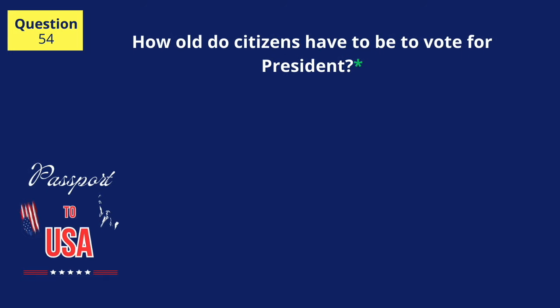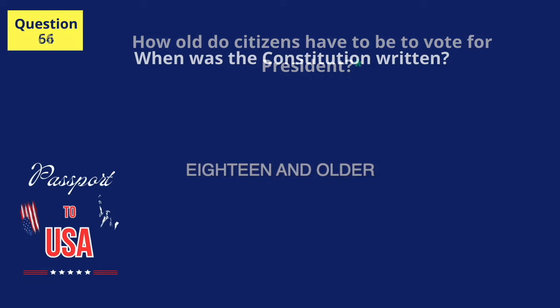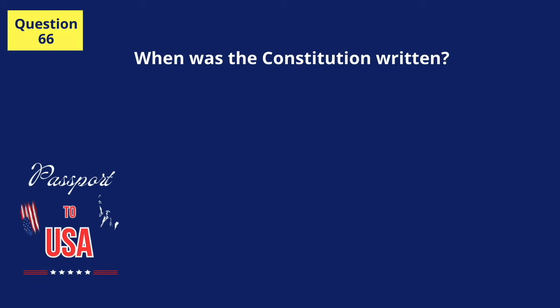How old do citizens have to be to vote for President? 18 and older. When was the Constitution written? 1787.